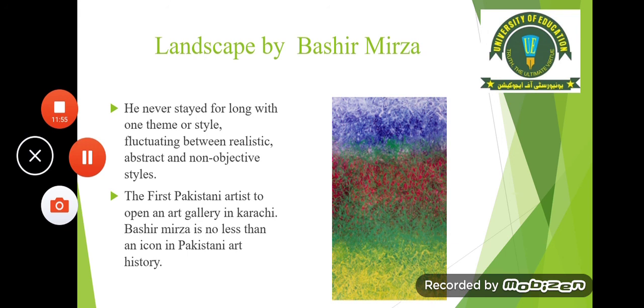Landscape by Bashir Mirza. He was a very famous landscape painter who never stayed long with one theme or style, fluctuating between realistic, abstract, and non-objective styles. These are artists who explored more than one style. His work already looks at abstract and non-objective forms. He was also the first Pakistani artist to open an art gallery in Karachi, and Bashir Mirza is no less than an icon in Pakistan's art history.